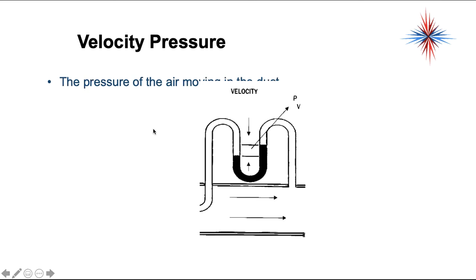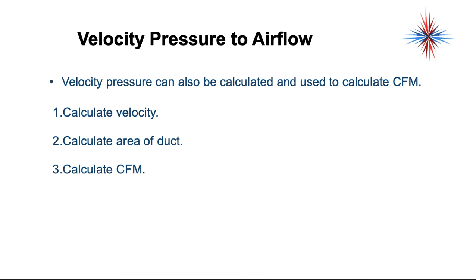Velocity pressure is the pressure of the air moving in the ductwork. It's not the outward pressure — it's the pressure of the air stream itself. Velocity pressure can be calculated and used to calculate CFM, which is the amount of air being moved. We calculate the velocity, calculate the area of the duct, and we can calculate the CFM.